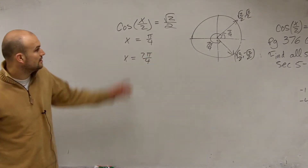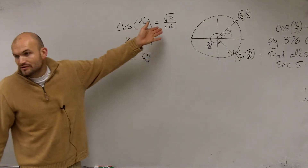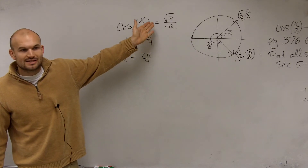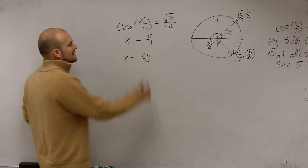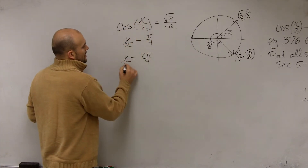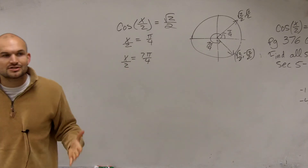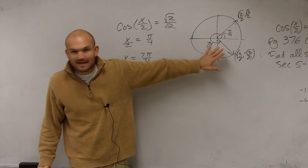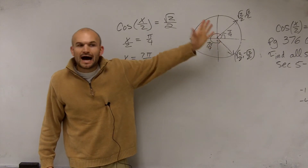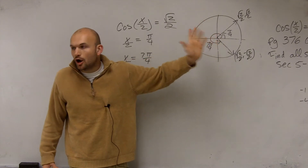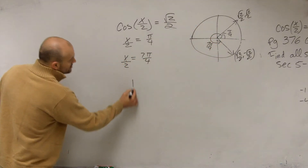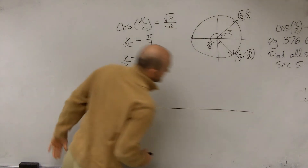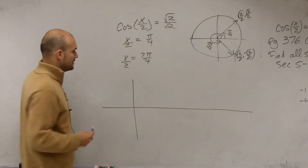Now, the difference is we're not solving for just x — our angle is x divided by 2. And the other issue is we're not just finding the angles that are on the unit circle, that's only the interval between 0 and 2 pi. I want to find all of the solutions. To help visualize what that looks like, let's go back and draw the cosine graph again.